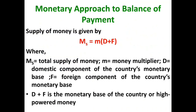Moving to the supply function: money supply MS equals m times (D plus F), where m represents the money multiplier, which is assumed to be fixed. So money supply is composed of two things: D, the domestic component of money supply — that is, domestic credit by the country's monetary authority or the domestic asset backing in the country's money supply — and F, the foreign component, representing the foreign exchange reserves. So money supply equals D plus F, which is the monetary base of the country, also known as high-powered money.